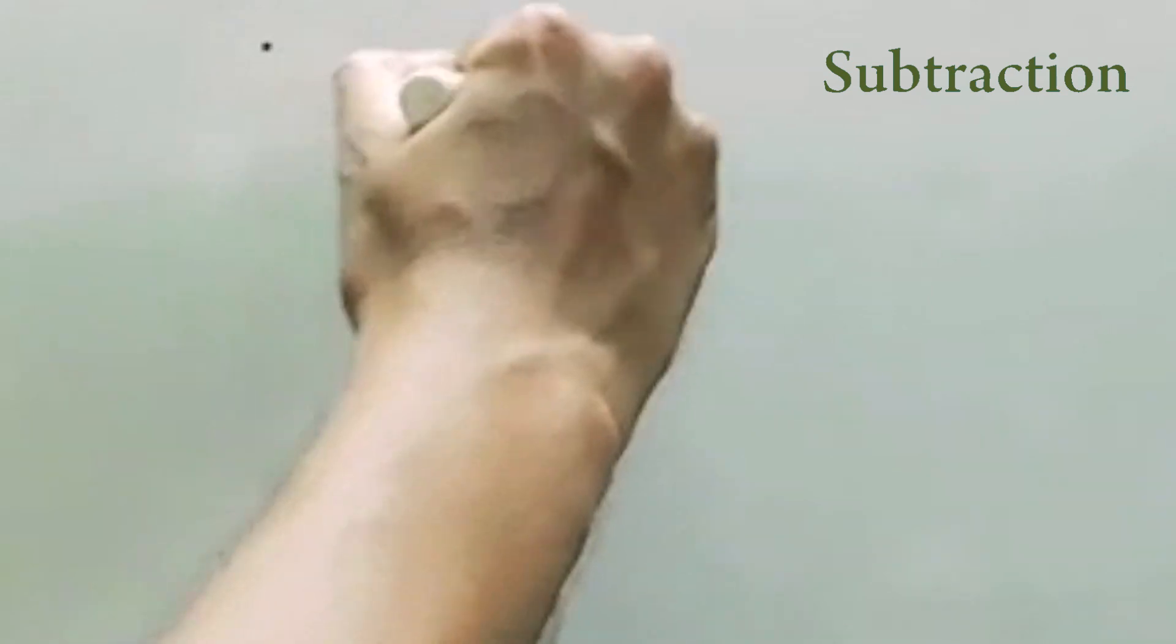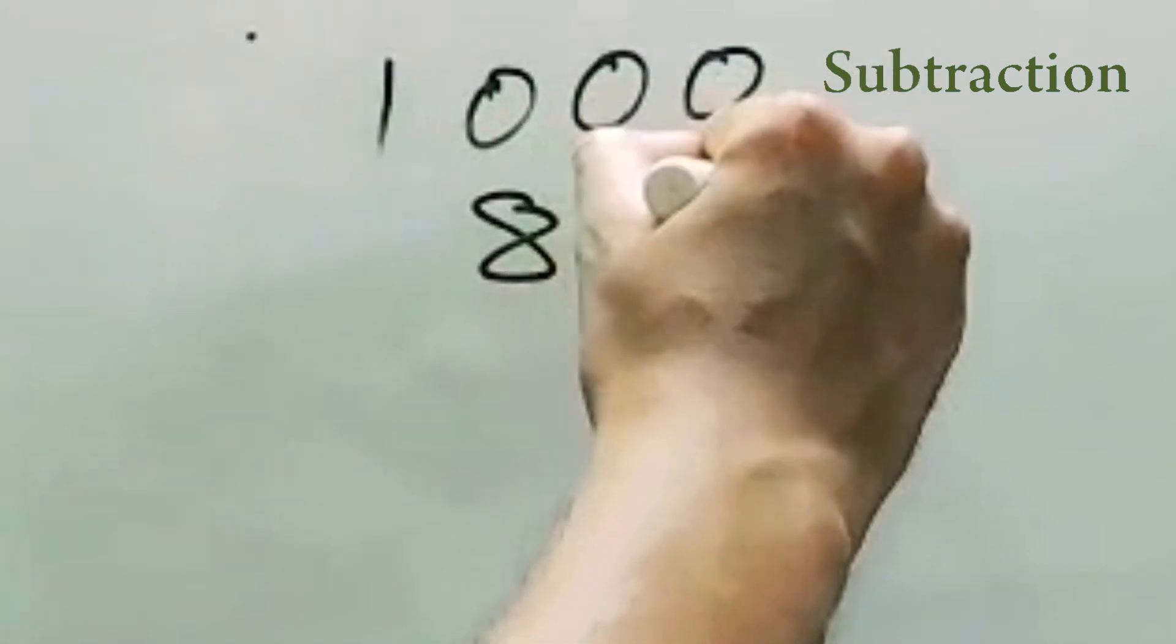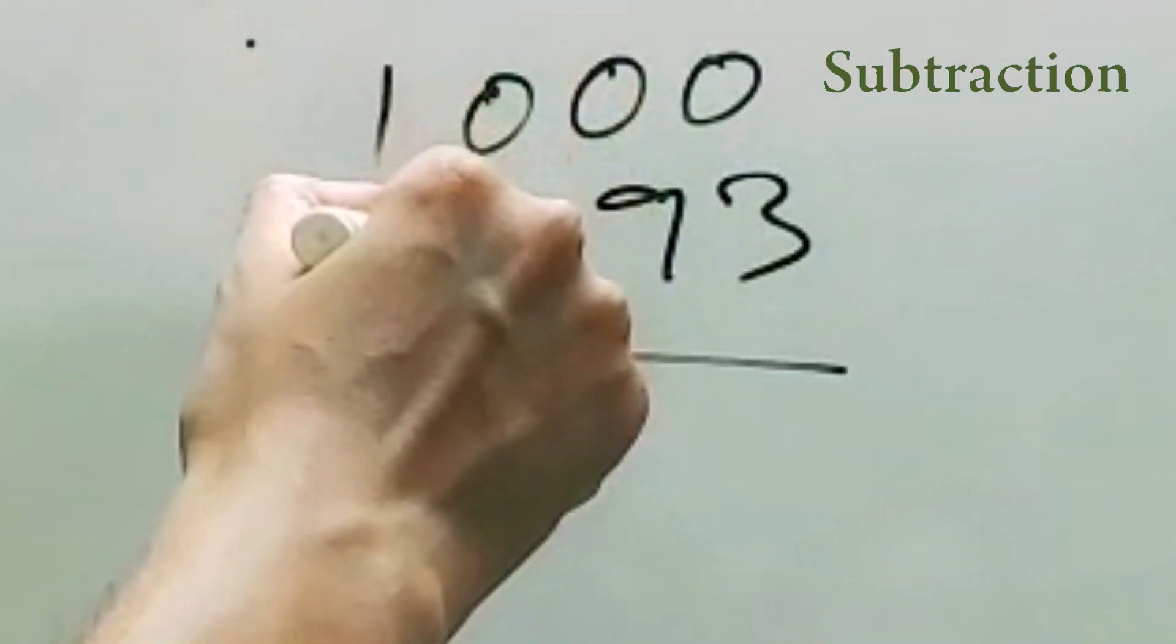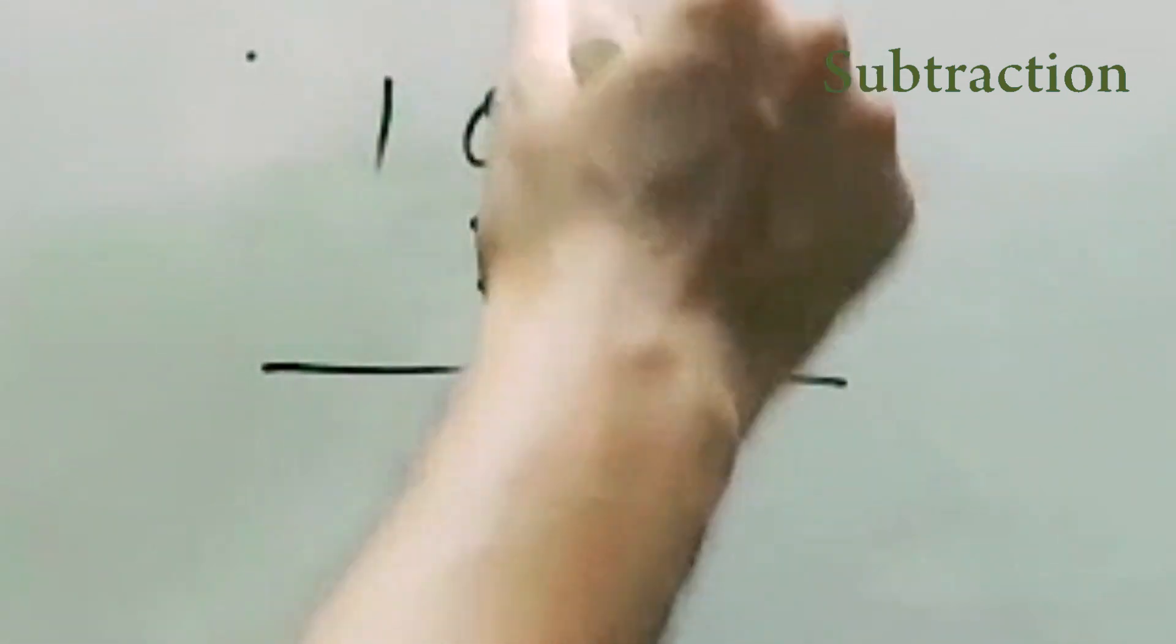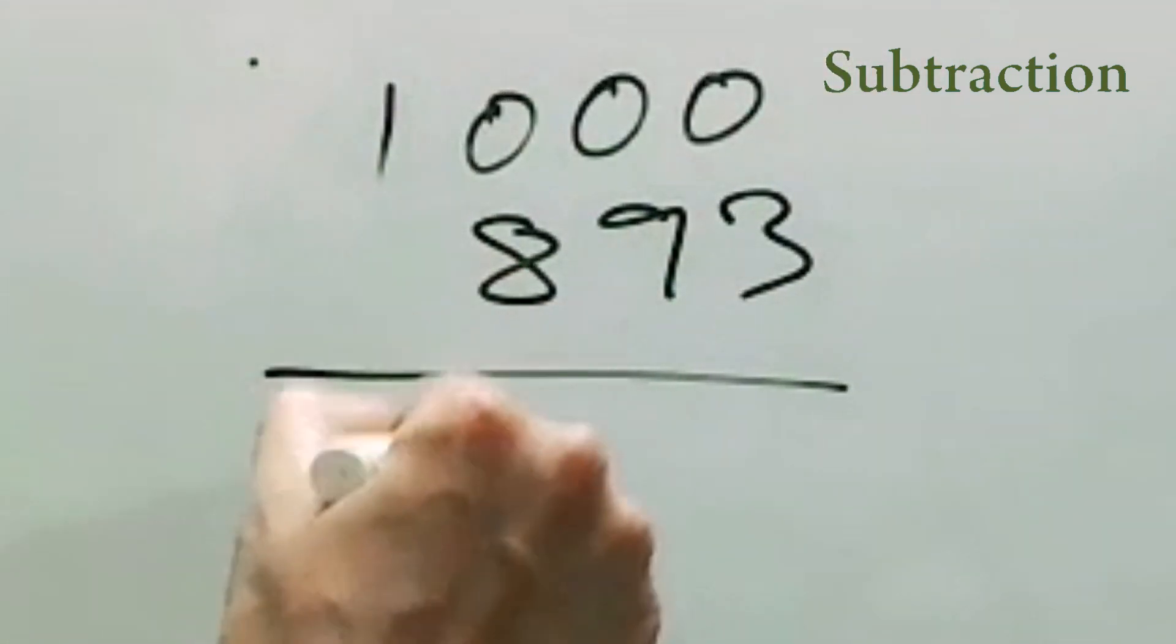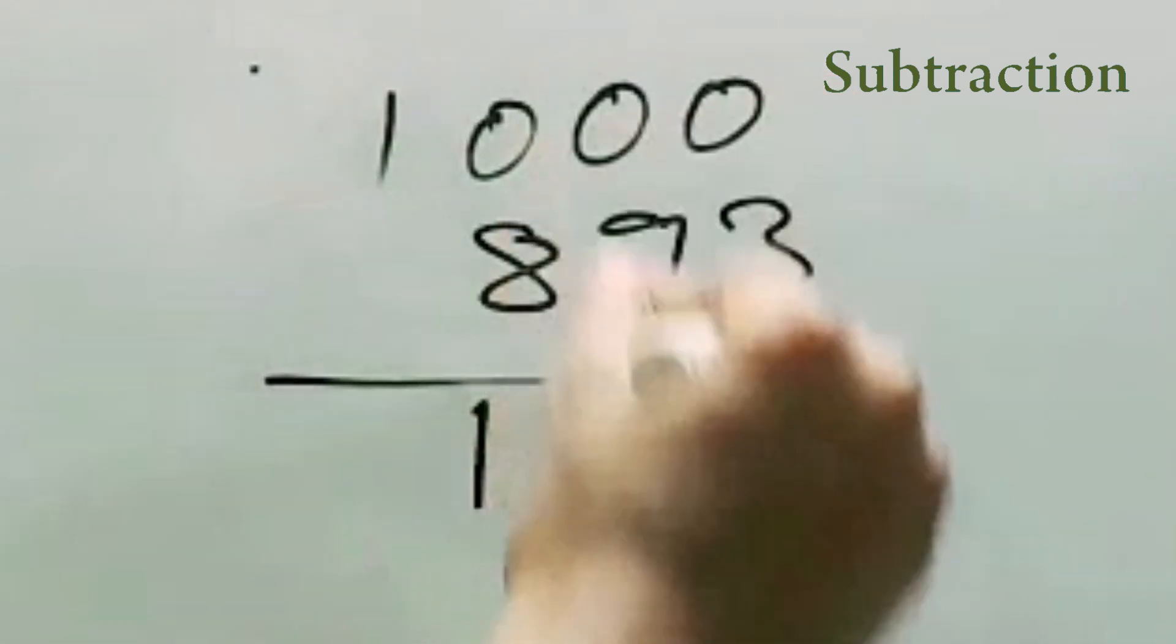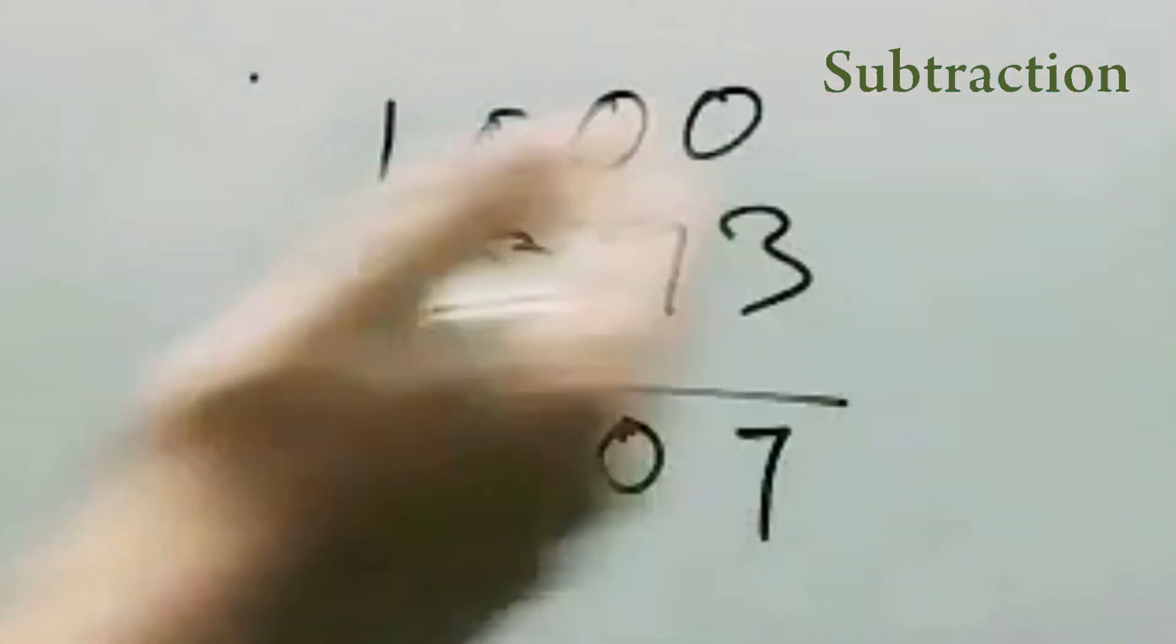Next one. Anything like 1000 minus 893, same thing. Just first one, subtract from 9, this one subtract from 9, this one subtract from 10. So 8 plus 1, 9, 9 plus 0 is 9, and 7 plus 3 is 10, so 107 is the answer. Same thing.